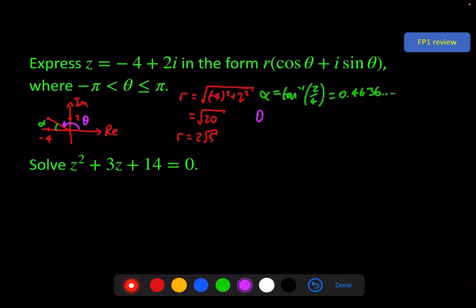And to find theta, I need to do π minus alpha, which gives me 2.6779..., and I'll write that to three decimal places in radians.